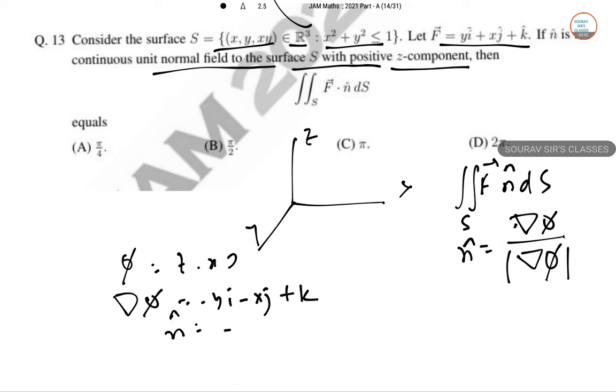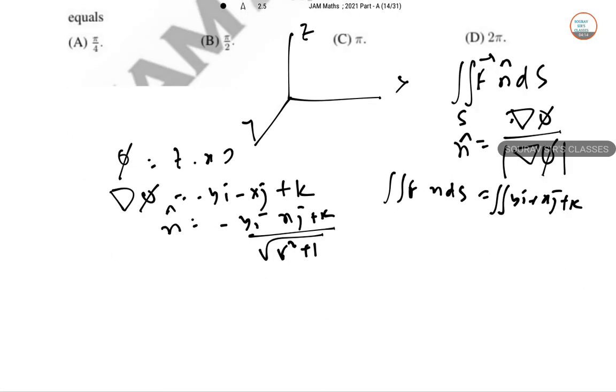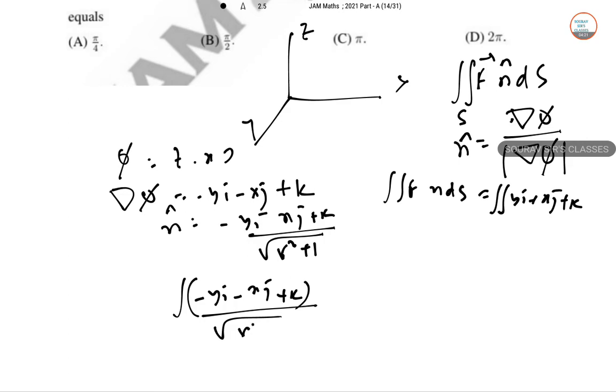So N hat from here will be del phi over root over R square plus 1. So now the integral becomes double integration Y I, X J plus K.